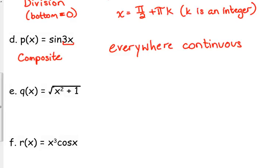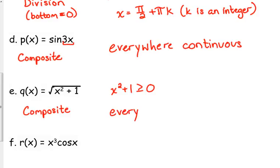Example E: Q(x) = √(x² + 1). This is another composite function — we're plugging x² + 1 into the square root of x. Our concern is that what's under the square root must be greater than or equal to zero. So x² + 1 must be ≥ 0. Is it? x² is always a positive number, and adding 1 keeps it positive. So this one is everywhere continuous — even though most square root functions have a restricted domain, this one does not. Anything works.